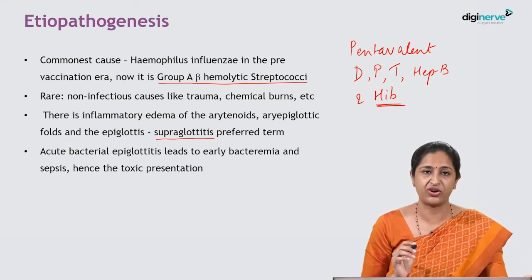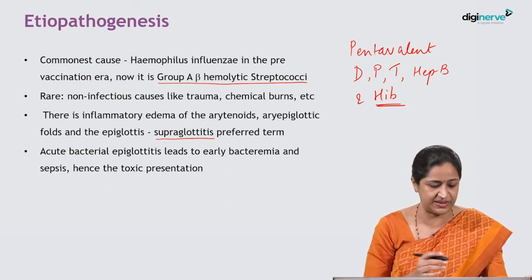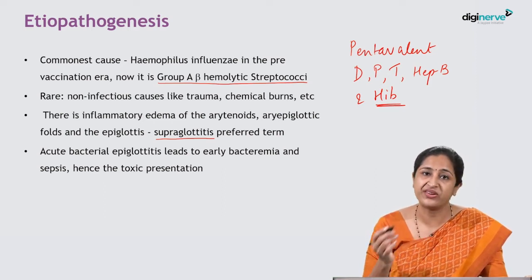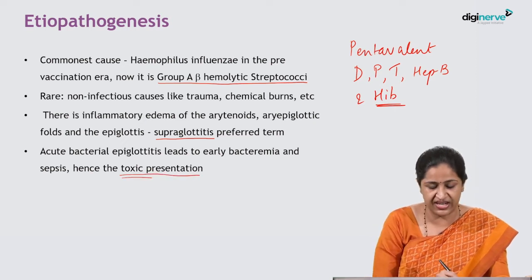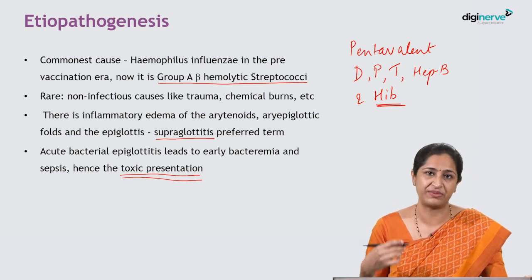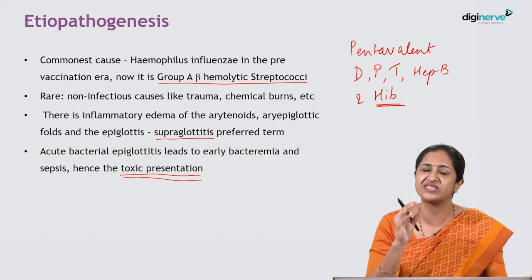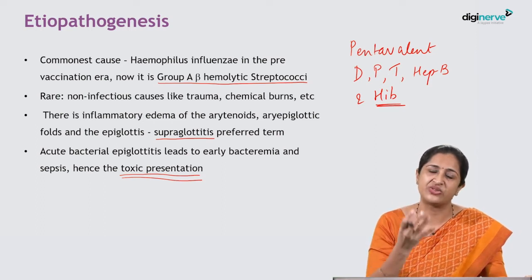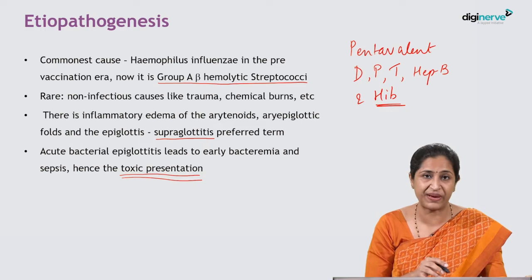Acute bacterial epiglottitis soon results in early bacteremia and sepsis. This explains the toxic presentation — where a child who was perfectly normal in the morning suddenly becomes sick and dull with drooling of saliva by the evening, because the epiglottis is a very vascular organ and acute inflammation by these bacteria can rapidly result in sepsis and toxicity.